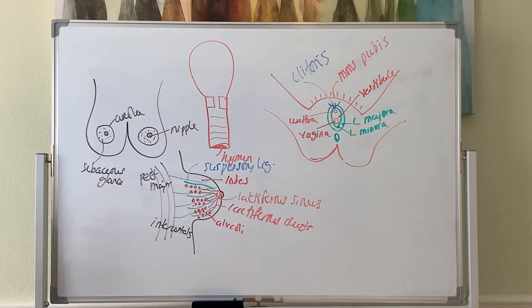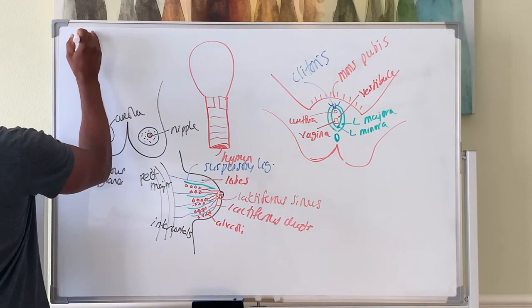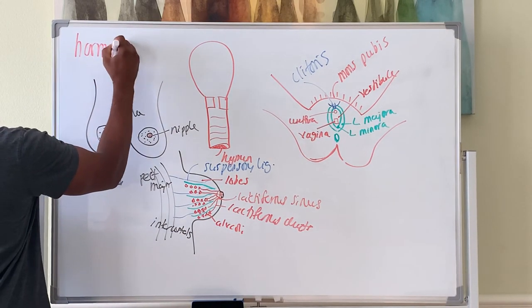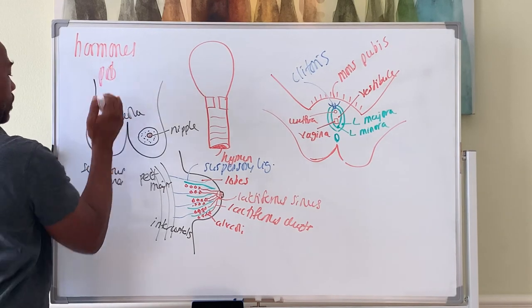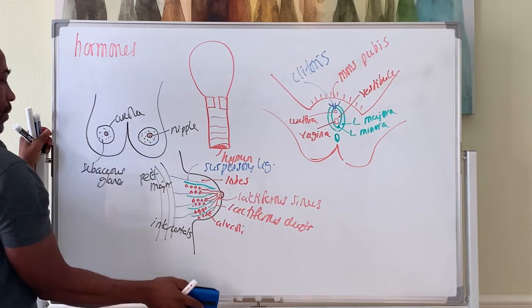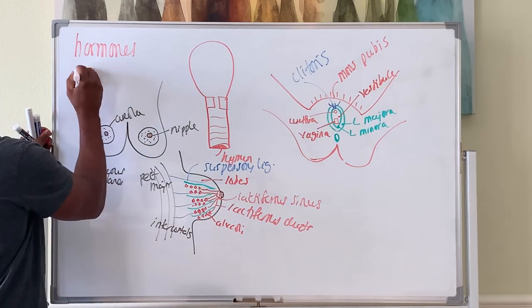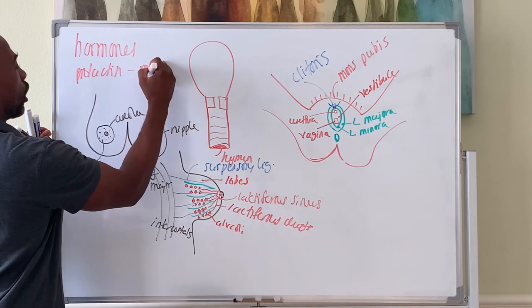Now some more things here in terms of hormones. There's a hormone called prolactin. Prolactin hormone triggers milk production.